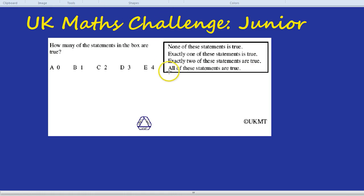Same thing for all of these statements are true. It would mean that all these top three must also be true. And yet, how can it be that exactly two and exactly one or none are all correct? It can't be. So the only one that makes sense is if exactly one of these statements is true. And which statement is true? The statement itself. That exactly one is true.